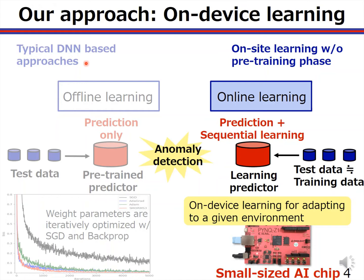Let me compare the on-device learning with typical deep learning, which is based on backpropagation and stochastic gradient methods. In such offline learning, the training datasets should be prepared beforehand, and the predictor is trained with training datasets by using high-performance computing devices such as GPGPUs. On the other hand, in our on-device learning, the test data and training data are the same. That is, every time a new data comes, prediction and sequential training are performed for the anomaly detection.